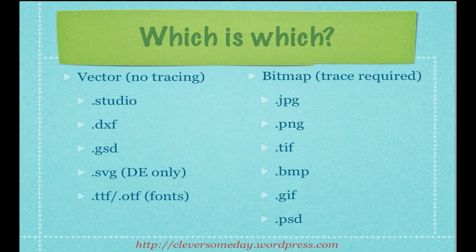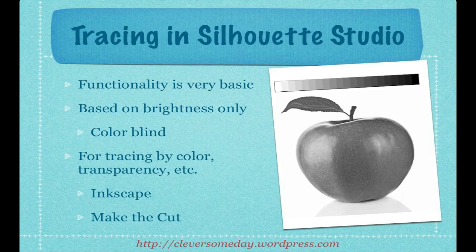With that out of the way, we're ready to look at tracing in Silhouette Studio. You need to know that Silhouette Studio's tracing function is very basic — it can only trace based on brightness levels. In other words, it is colorblind. Other programs such as Inkscape and Make the Cut can trace based on color, transparency, and more. But Silhouette Studio's trace engine is limited to seeing everything as shades of gray.